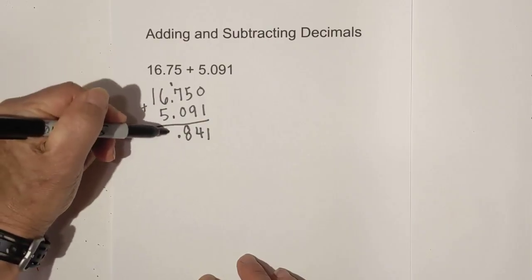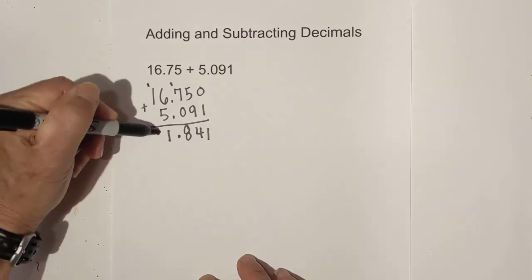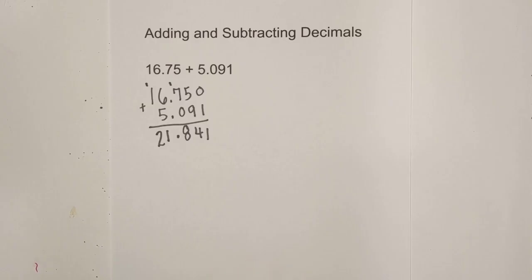Six plus five is eleven, and then we bring the one over here. So we have one plus one is two. The answer is 21.841.